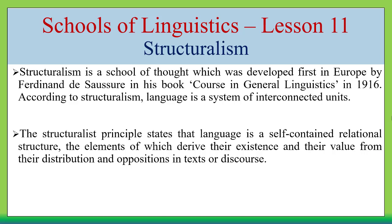The elements of language derive their meaning and value from the distribution of their opposites — that is, from the existence of other elements that precede an element or can replace it. Each element derives its meaning from its opposition to other elements in texts or discourse.